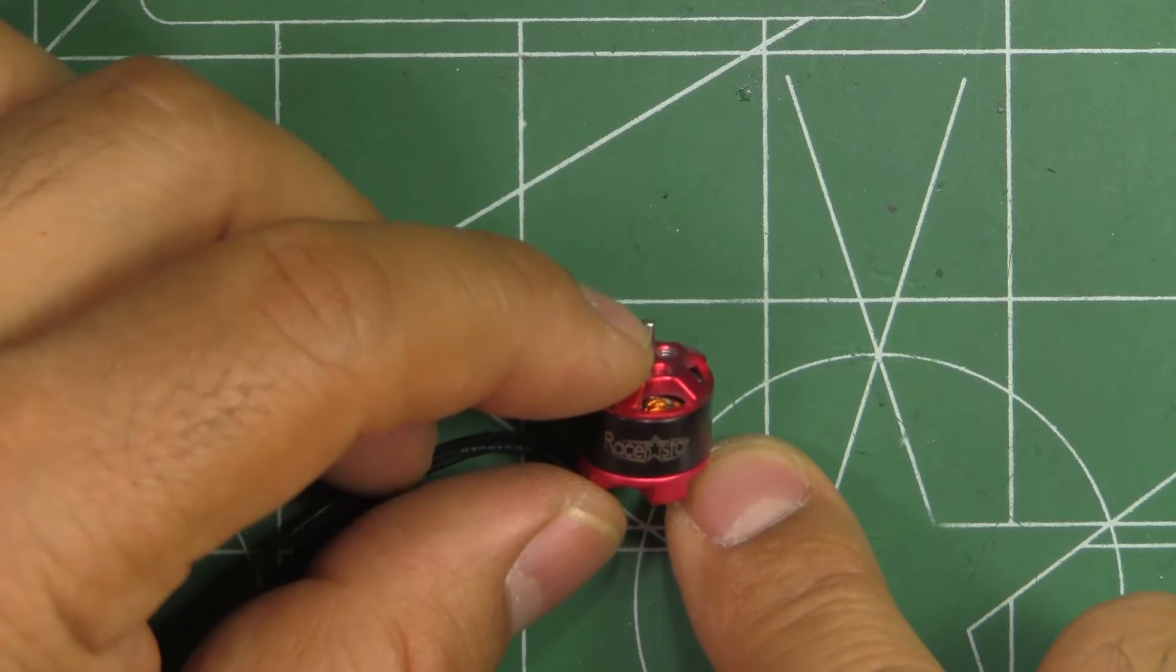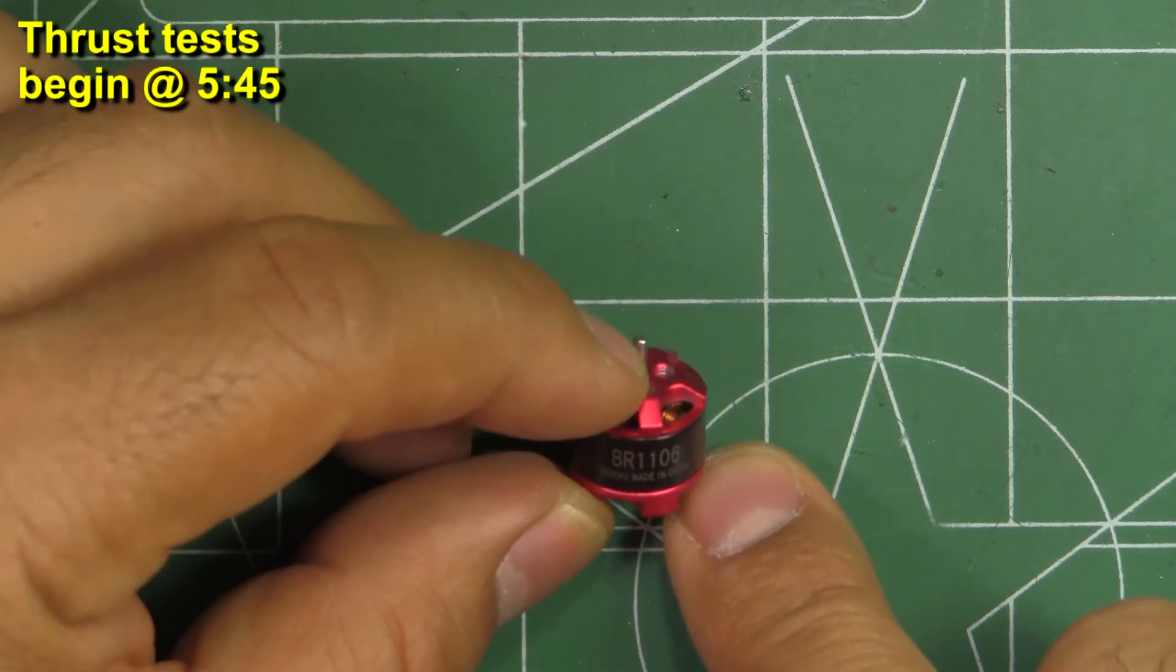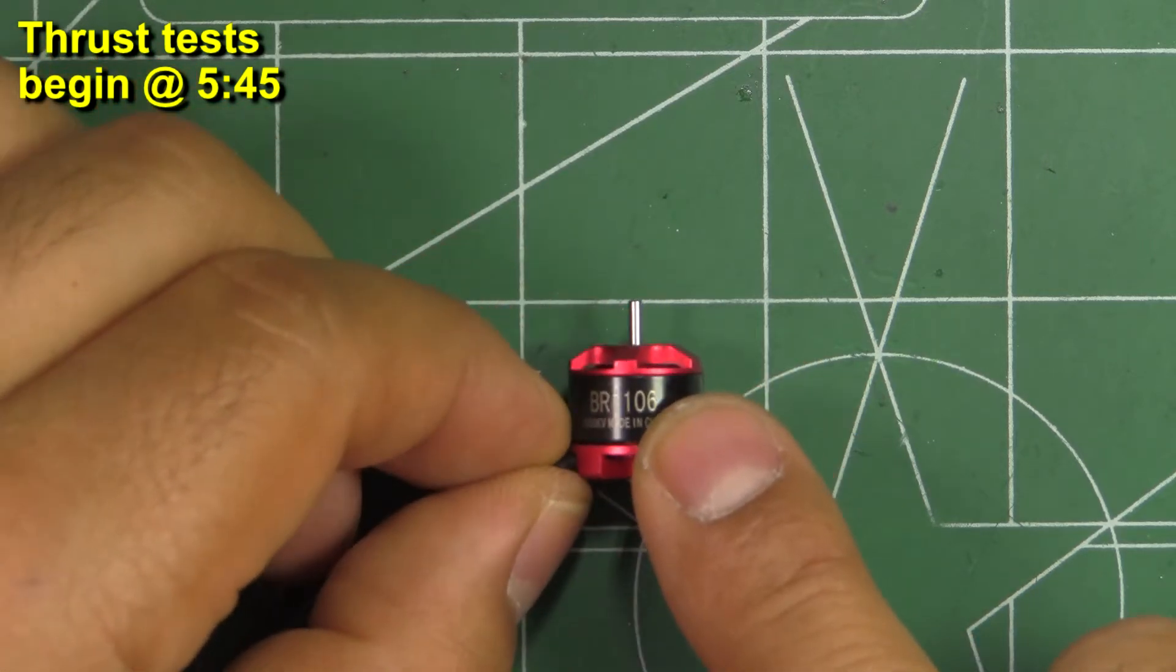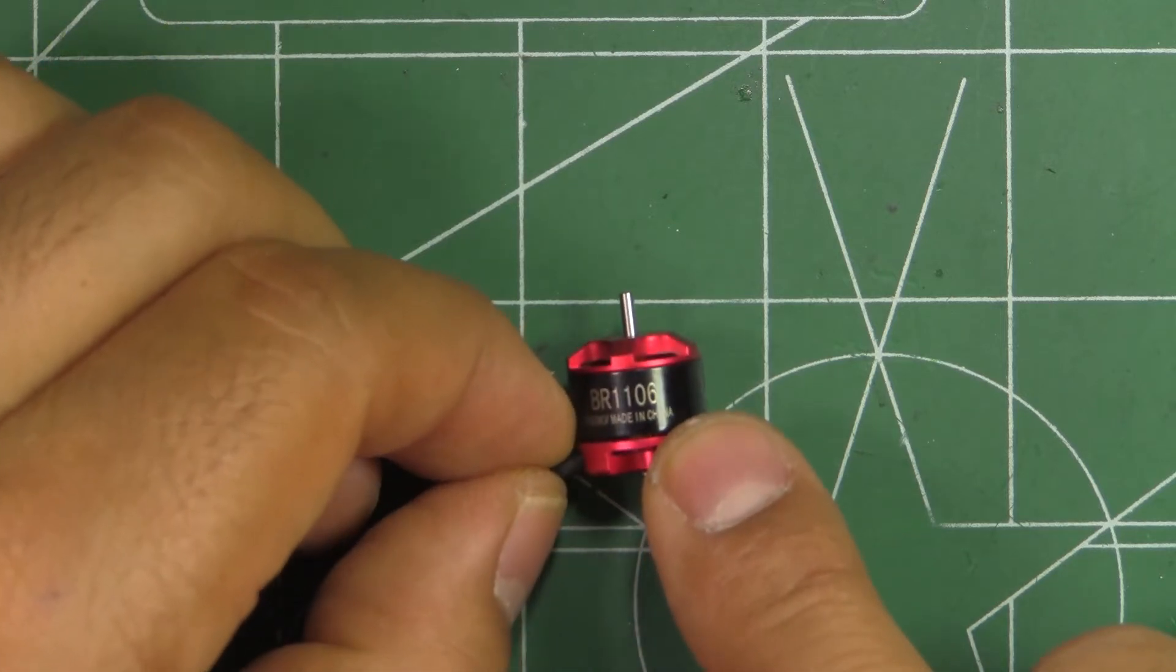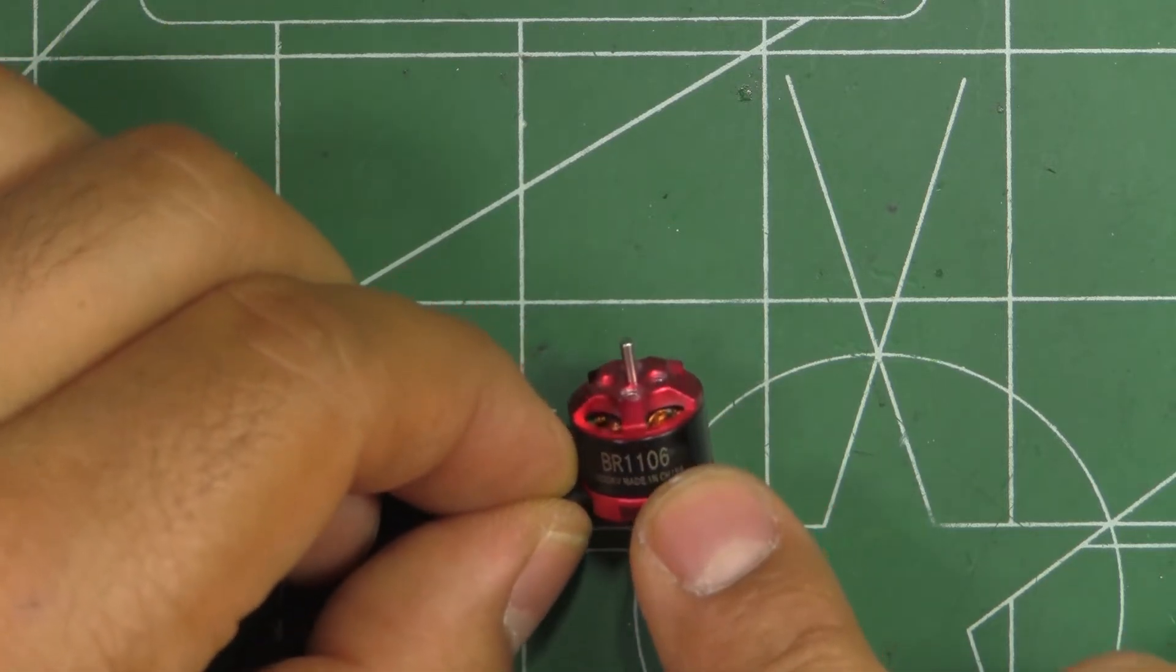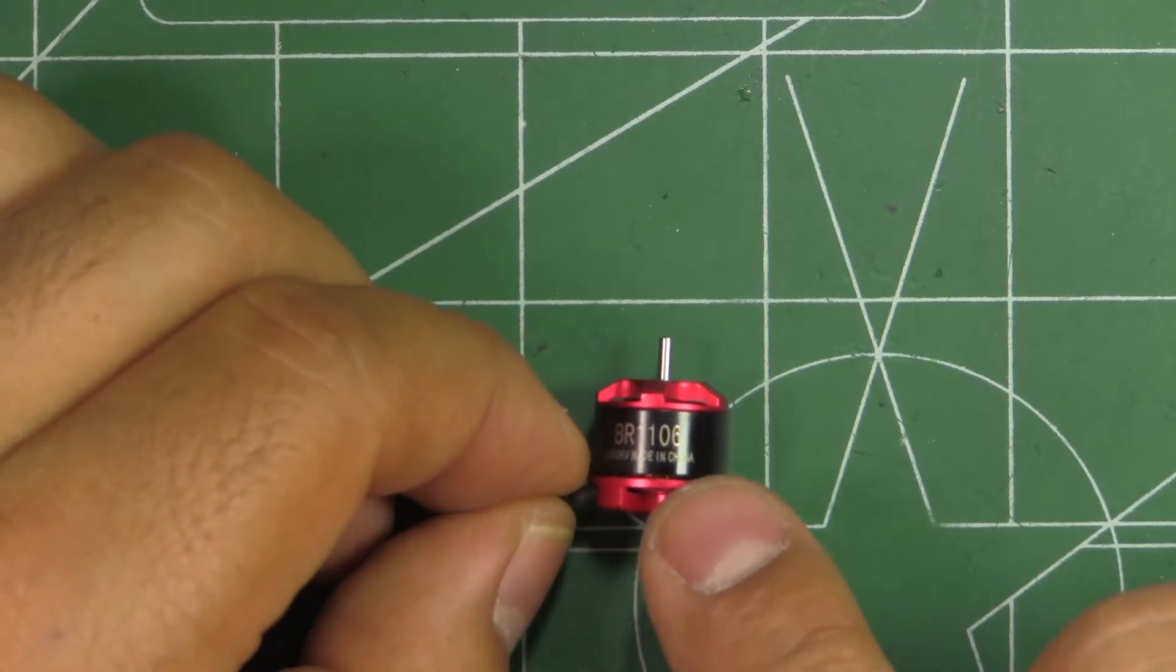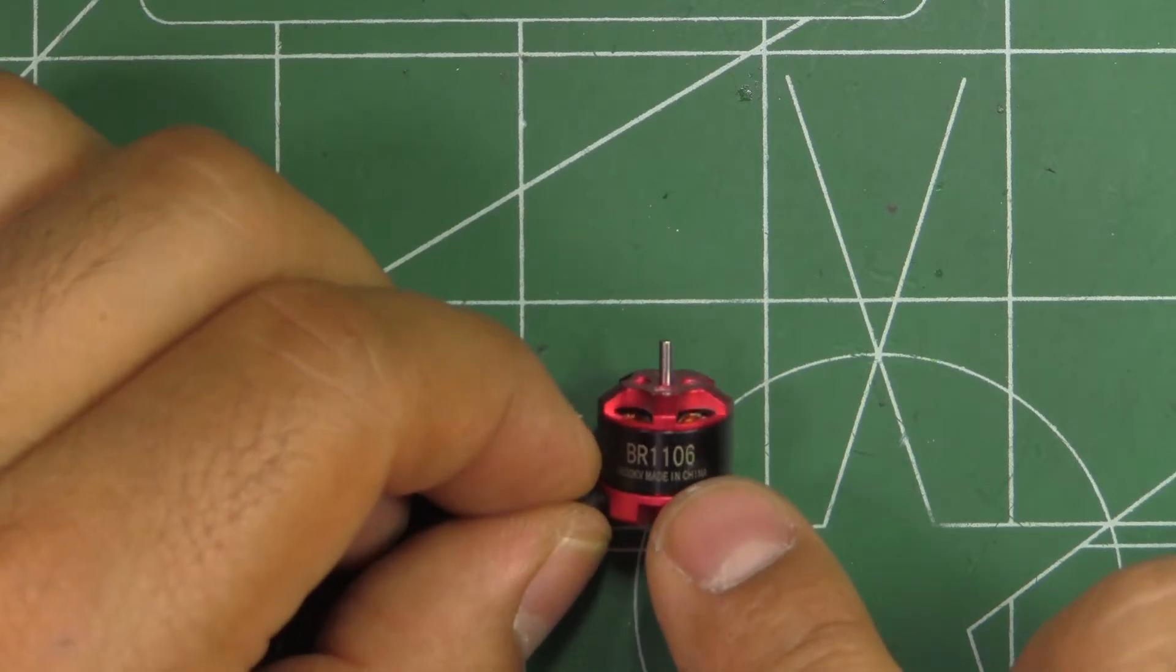All right, so this time here we have the Racer Star BR 1106 3800 kV. I think this is the only 1106 that Racer Star makes, and it's only in 3800 kV, which I don't know if this kV is high enough for most of the flying that people are doing with these size motors.